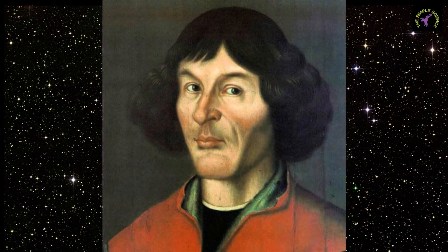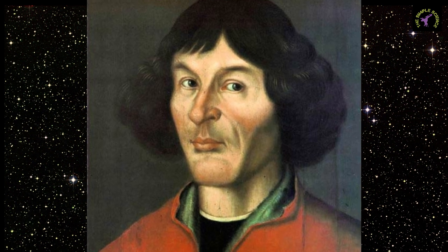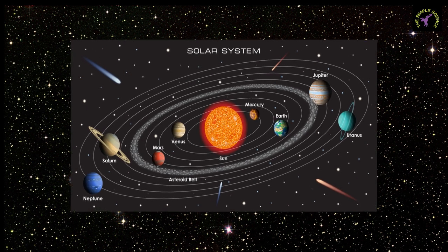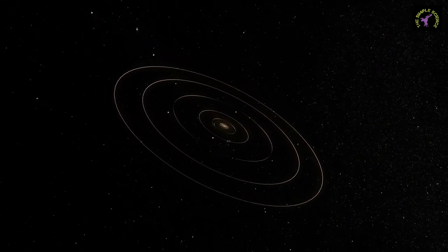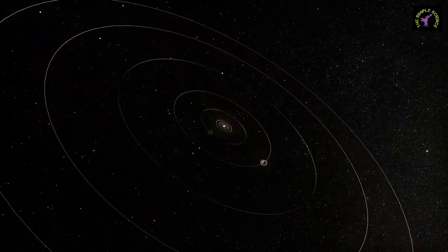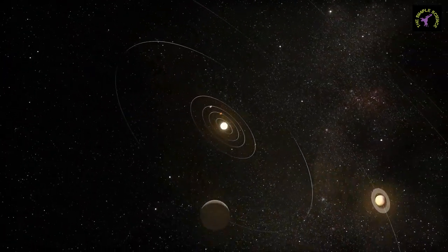In the early 16th century, a Polish priest, Nicholas Copernicus, proposed the idea that the sun was stationary at the center and Earth and other planets move in circular orbits around the sun.